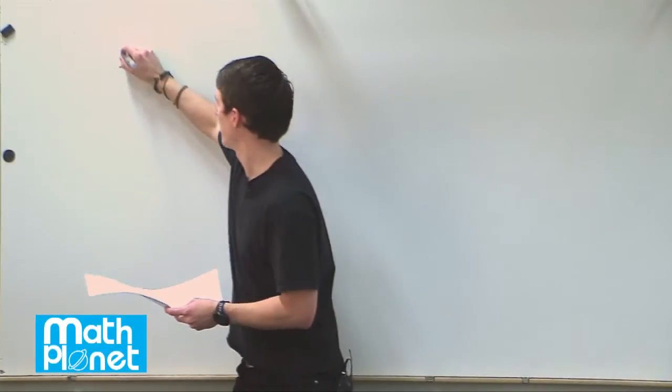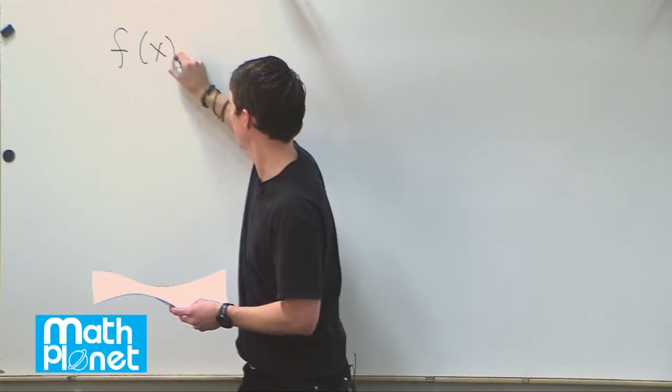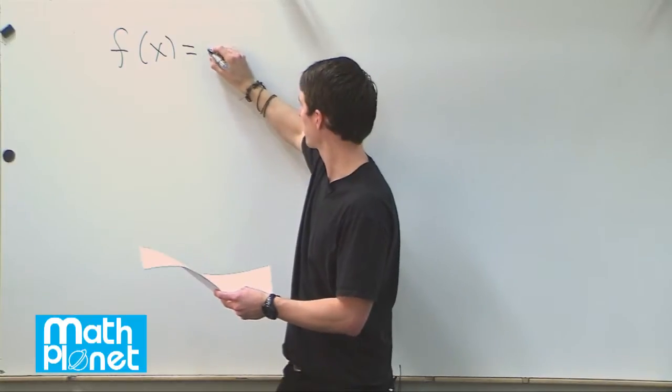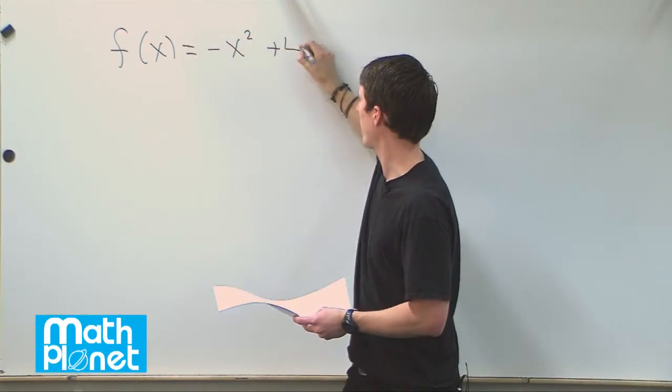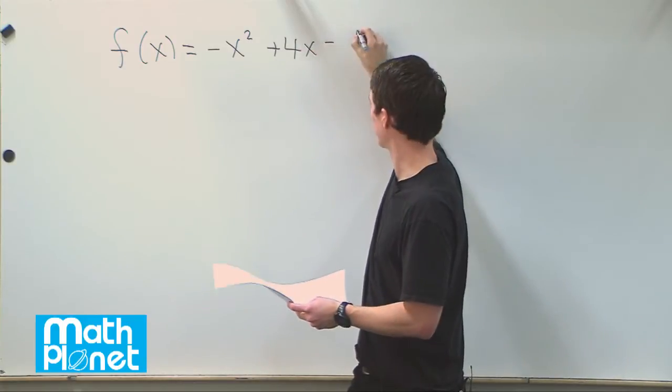Here we have a function f of x is equal to minus x squared plus 4x minus 5.